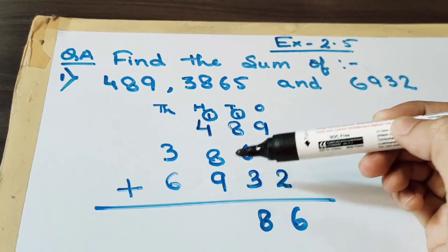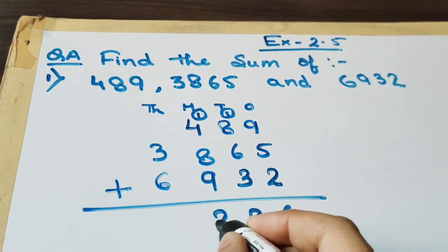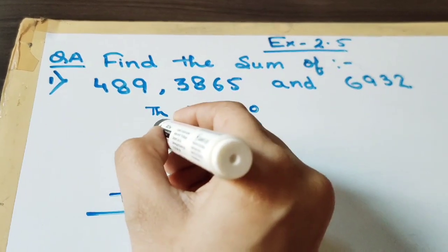Next 4 plus 1 plus 8 plus 9. That is 22. So we will write here 2 and 2 will be carry here.